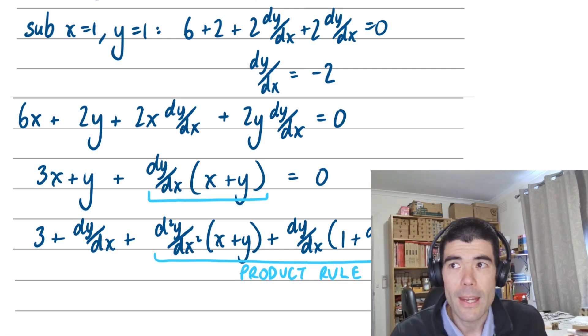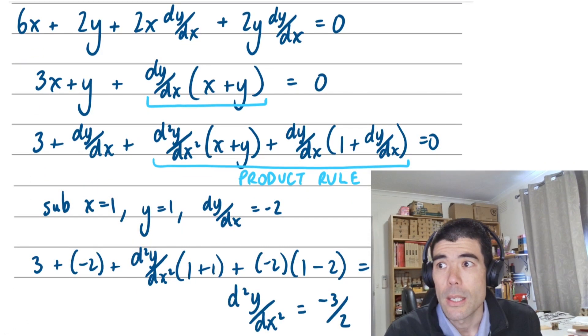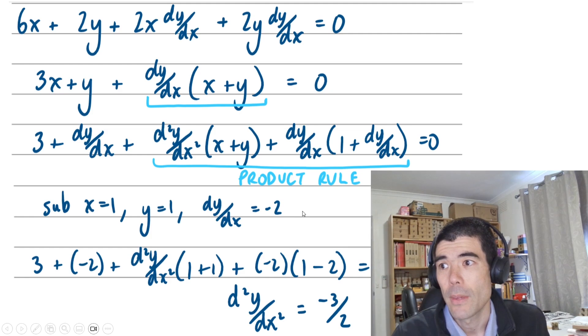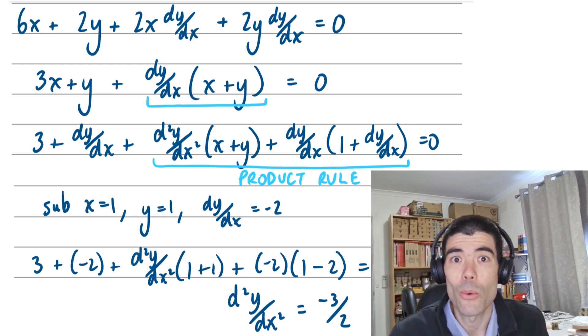The derivative of this would be 3 plus dy/dx plus, here's our product rule, second derivative times x plus y plus dy/dx times the derivative of x plus y. Once we have that, we can sub in x is 1, y is 1, dy/dx is negative 2 as we found from before, and then rearrange to solve for d²y/dx² as negative 3/2.